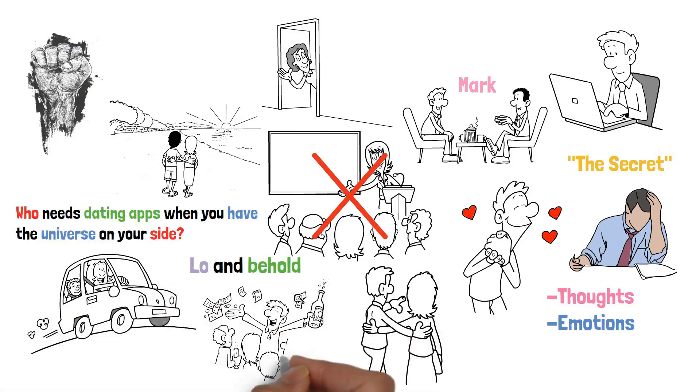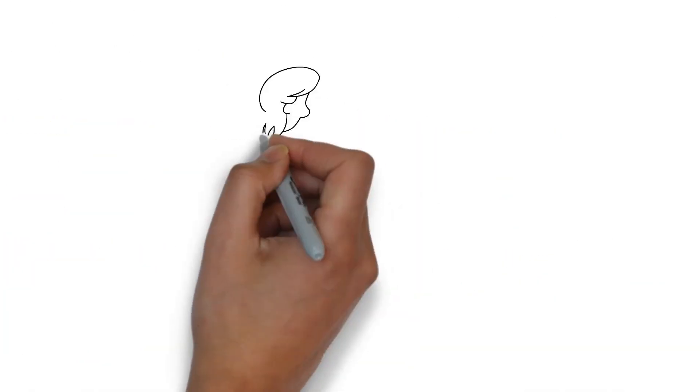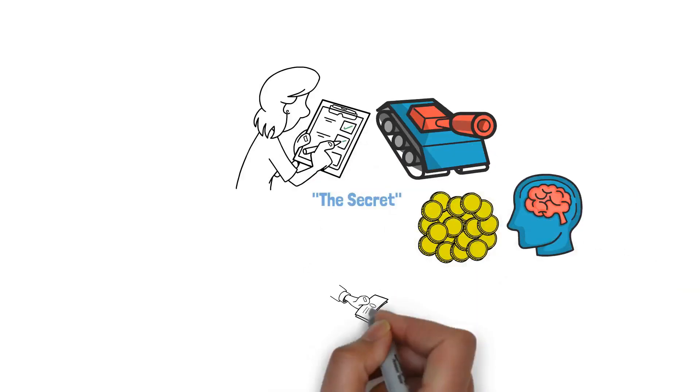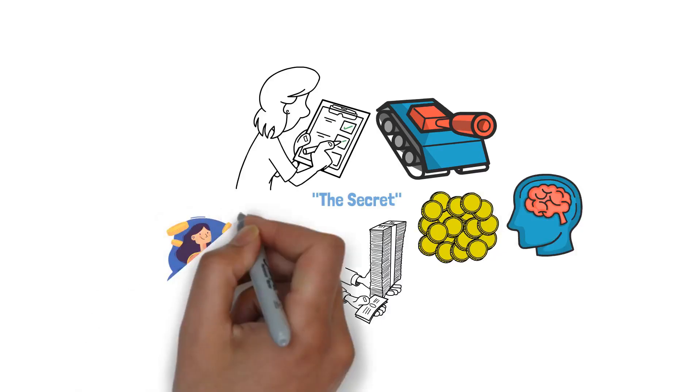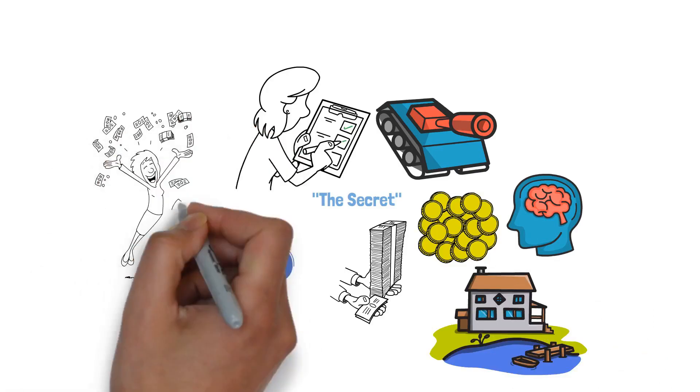Who needs dating apps when you have the universe on your side? Now let's switch gears to financial success. Meet Jenny, who was drowning in debt and feeling like she would never escape the money struggles. But with the principles of the secret in her arsenal, she changed her financial mindset and started attracting abundance. Now Jenny is debt-free, and even bought herself a luxurious vacation home.